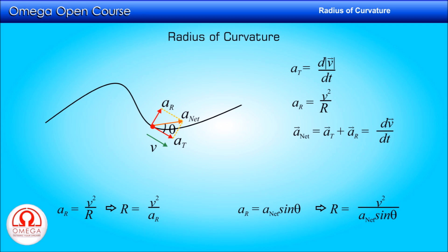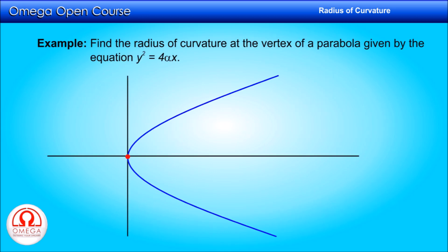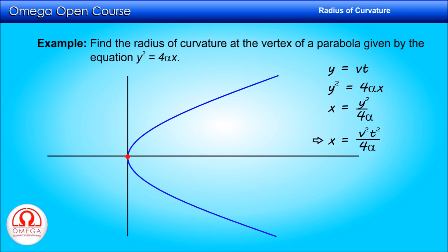Following examples will show how to use this concept in problem solving. Example 1: Find the radius of curvature at the vertex of a parabola given by the equation y² = 4αx. Let us assign a motion to a particle that moves along this parabola. Let us assume its y coordinate varies with time as y = vt. Since for the parabola y² = 4αx, x = y² / 4α. Putting the value of y, we get x = v²t² / 4α. Please note that there is nothing special about assigning y = vt. You could have assigned y = √(vt) or v·t³, or simply assigned x = vt and calculated the value of y from there.